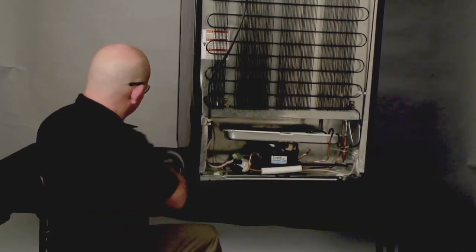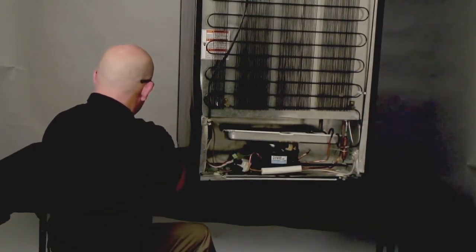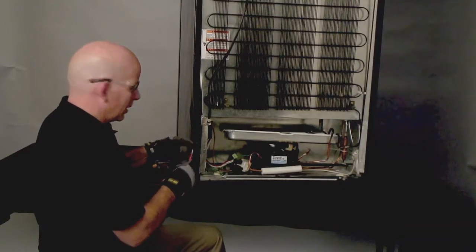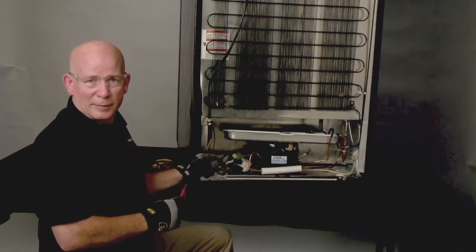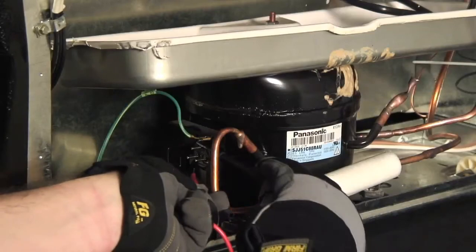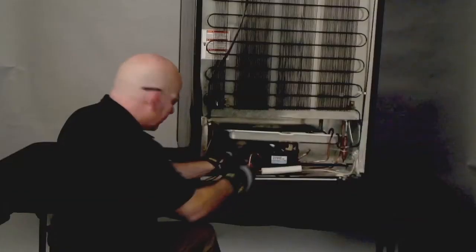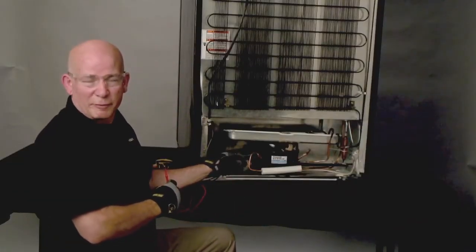Set your meter to ohms and test between the windings. First, test common to run. This is your lowest ohms reading of approximately five.